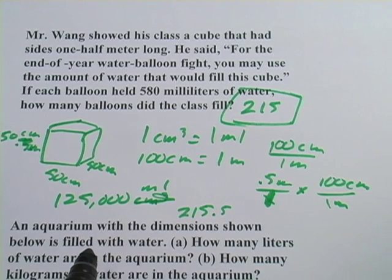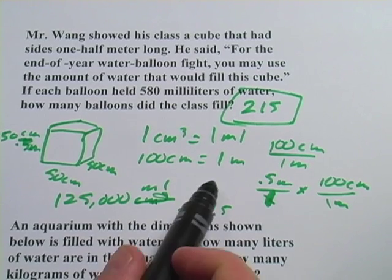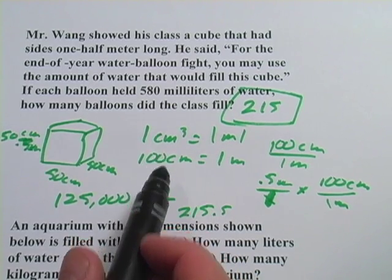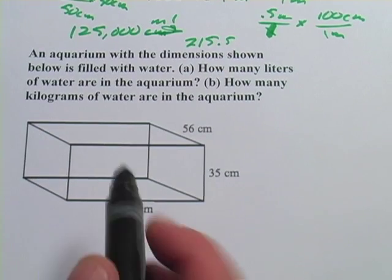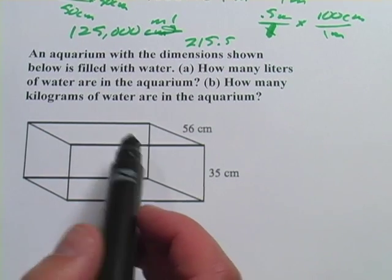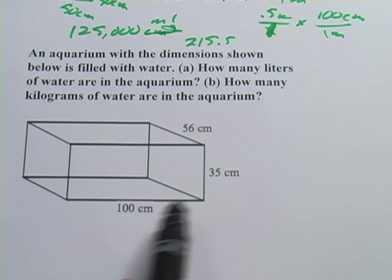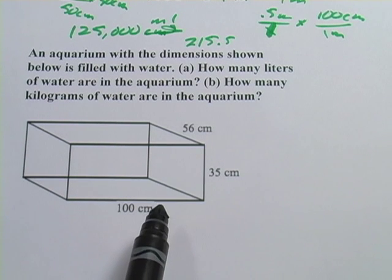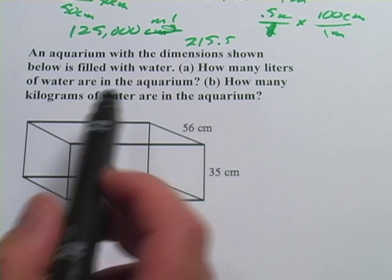So the key to know in this one is that cubic centimeters are the same thing as milliliters. Let's look at one more. This one says an aquarium with the dimensions shown below, and it's 100 centimeters by 35 centimeters by 56 centimeters, is filled with water.